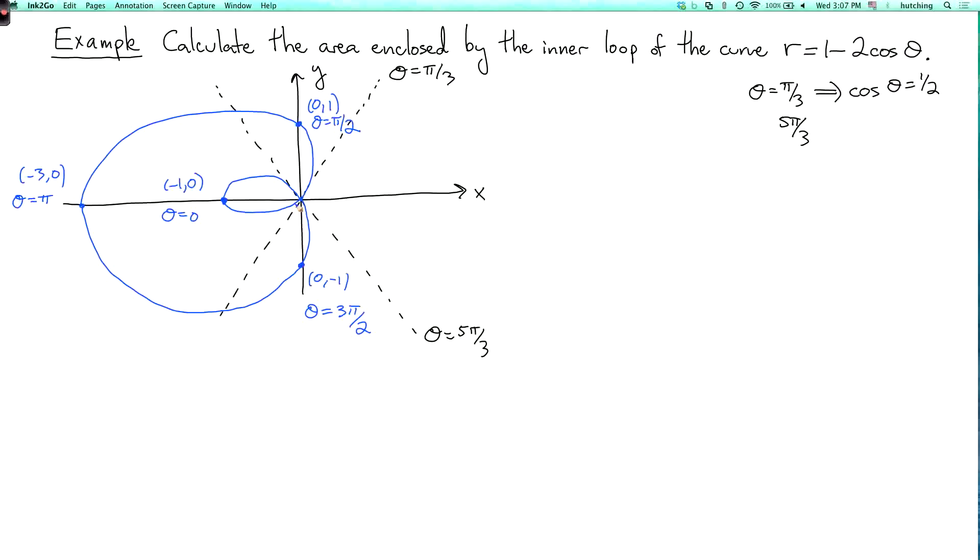So we want to calculate the area of this inner region here. So how do we do that? Area is the integral of r squared over 2. So I have 1 minus 2 cosine theta squared over 2 d theta.